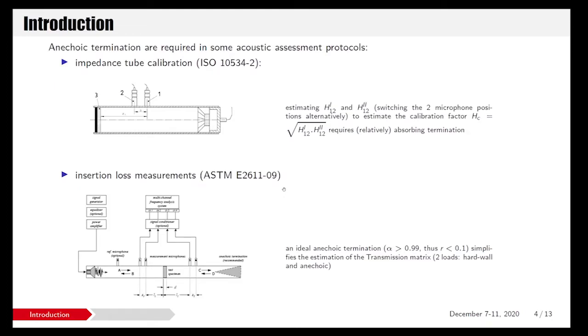Anechoic terminations are quite interesting in some applications, especially in impedance tube applications for measuring absorption coefficient, for instance, or for measuring insertion loss. In the first case, you need an anechoic termination to calibrate the impedance tube, to have a reference absorber to calibrate the microphone with the two-microphone method in ISO standard 10534-2. But also in insertion loss measurement, if you want to simplify the estimation of the insertion loss in the transmission matrix, you need to use an anechoic termination to ease the process for computing this matrix. And the absorption coefficient in this case should be quite high, more than 99%, to have the least reflecting coefficient as possible.